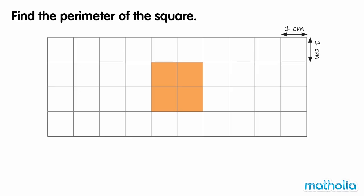Find the perimeter of the square. The perimeter is the distance of a continuous line around a figure. We can find the perimeter of this square by adding the side lengths together.